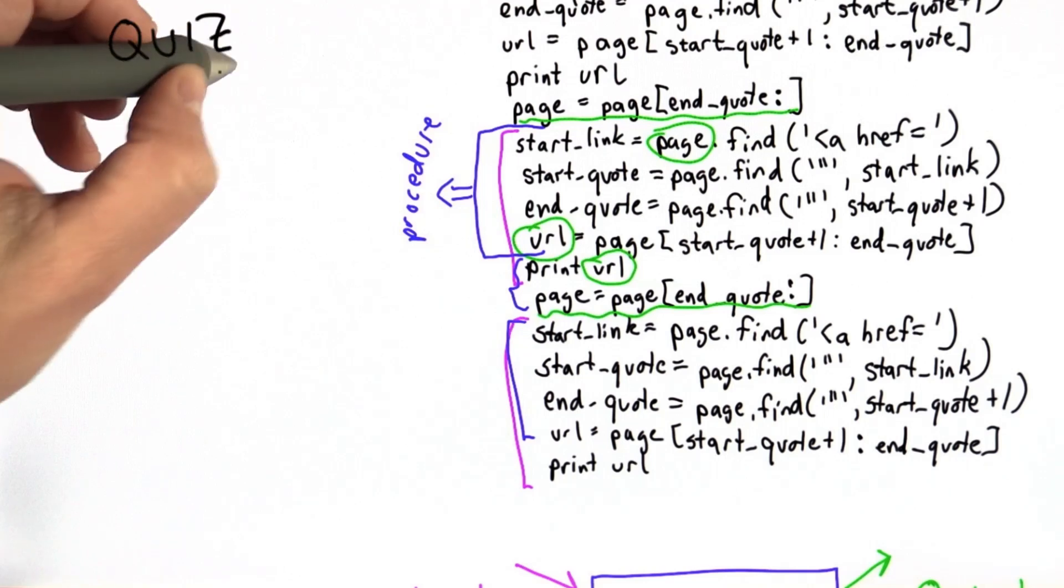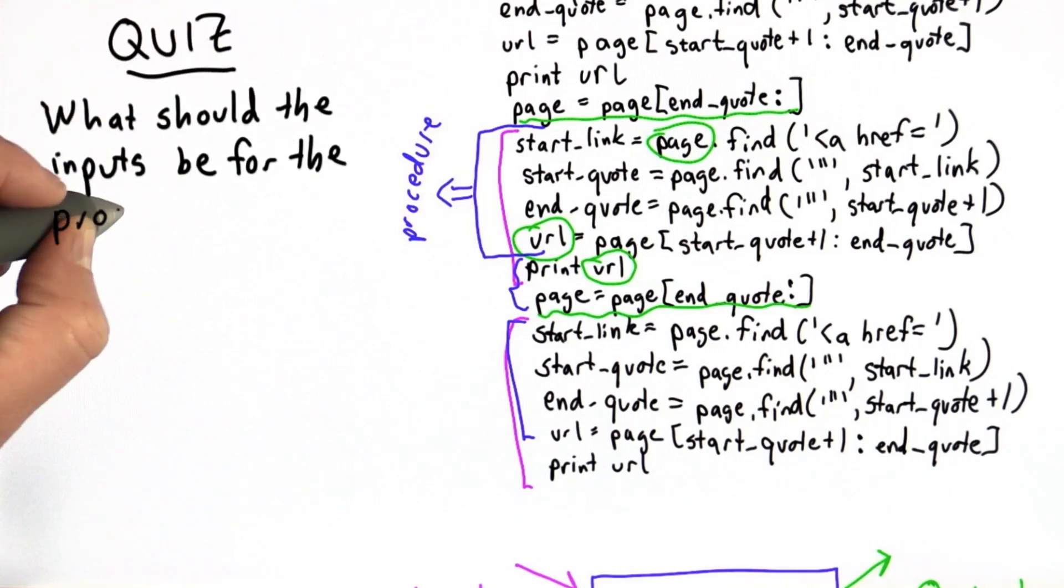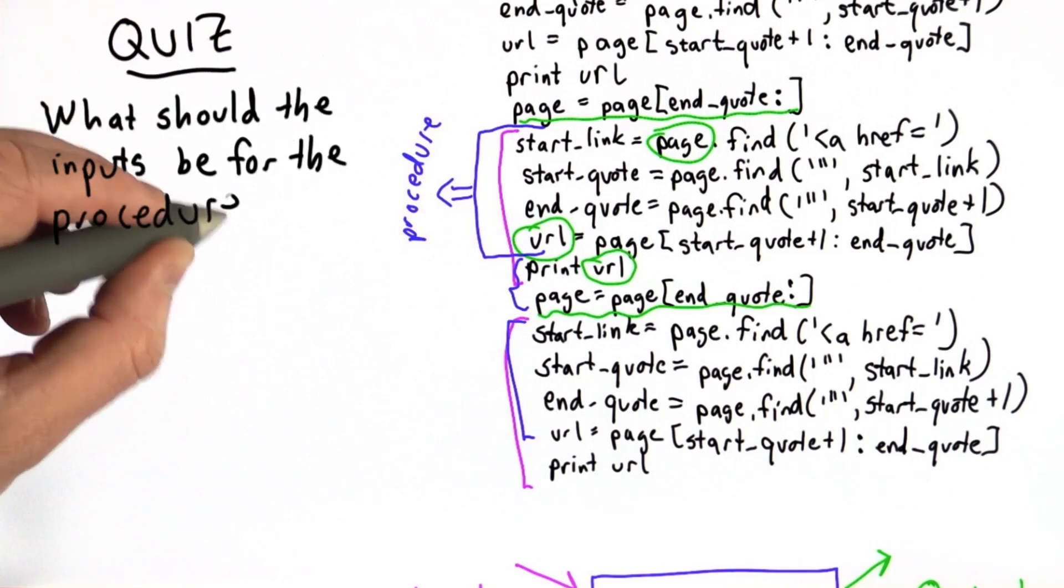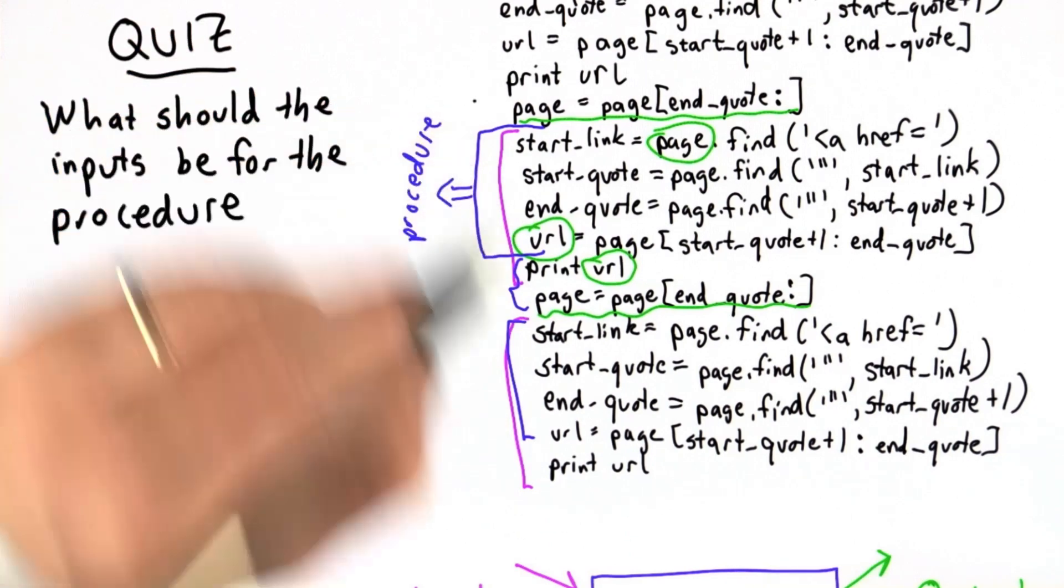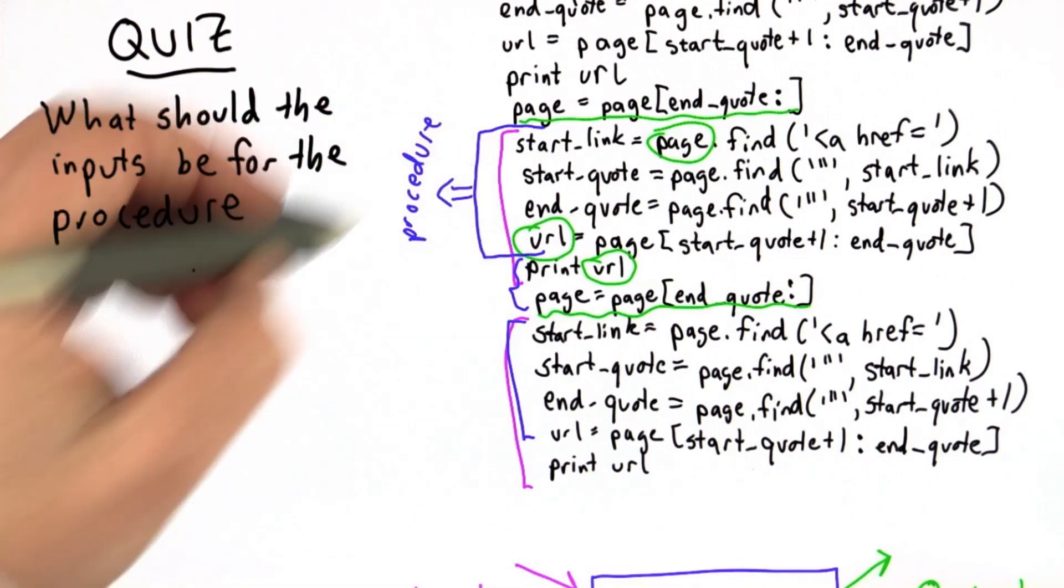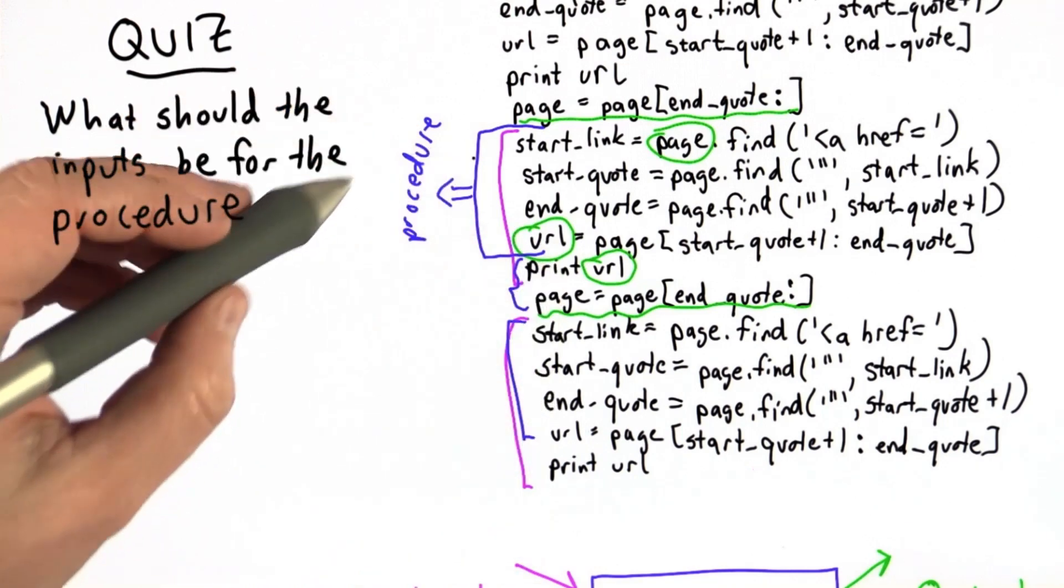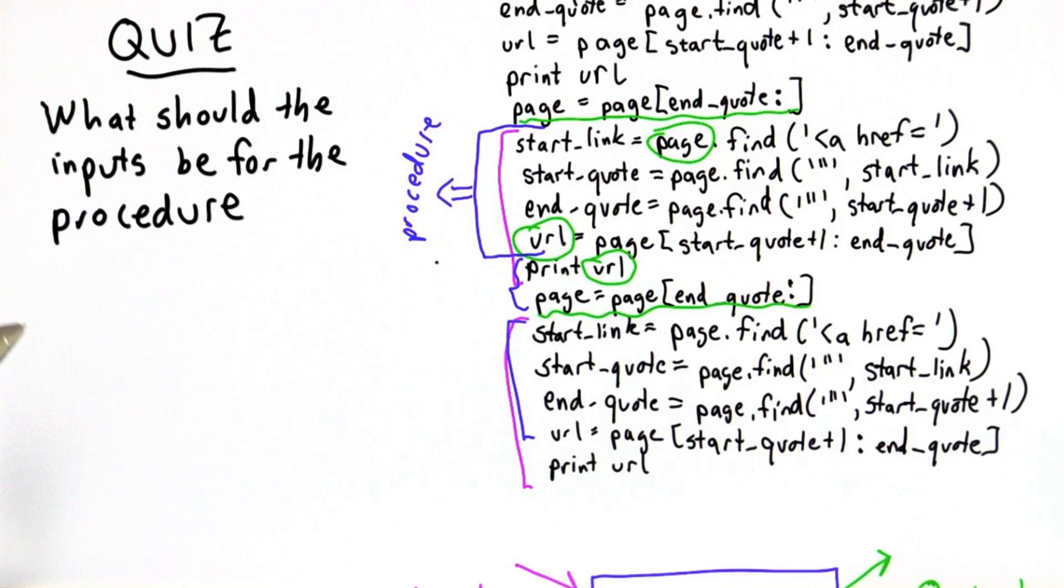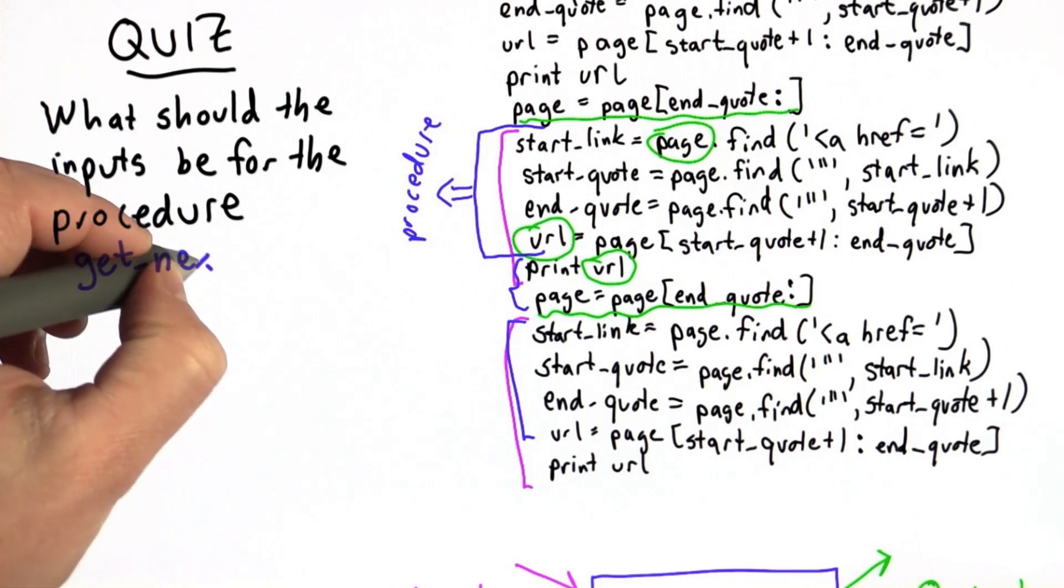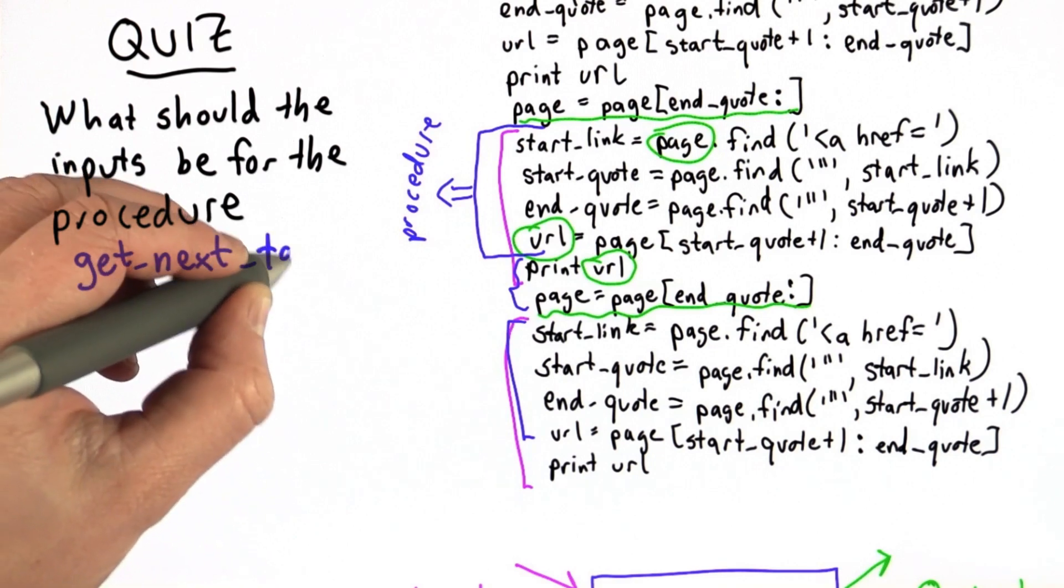Let's see if you can figure out what the inputs should be for the procedure that we want to make to replace this code. The goal of the procedure is to find the URL that's the next link target in this page, so we'll call the procedure GetNextTarget. It's important to give good names to procedures - that's how we remember what they're supposed to do.